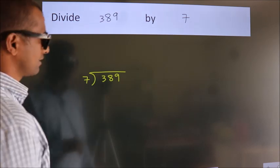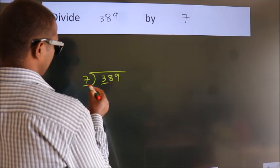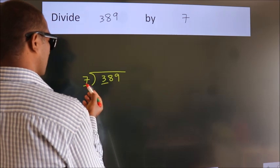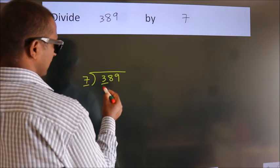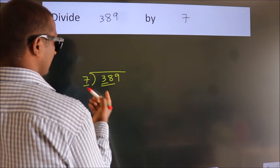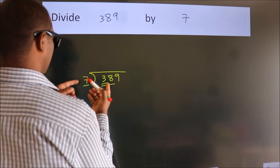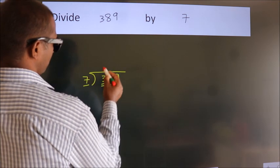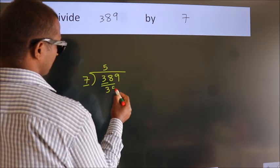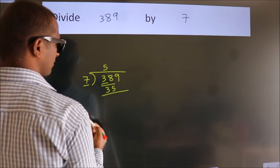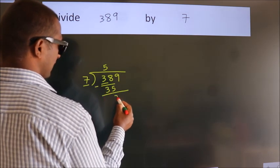Next, here we have 3. Here 7. 3 smaller than 7, so we should take 2 numbers: 38. A number close to 38 in 7 table is 7 fives 35. Now, we should subtract. We get 3.